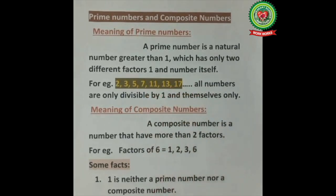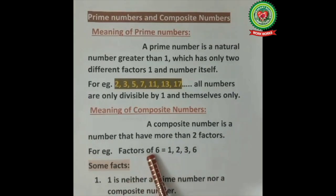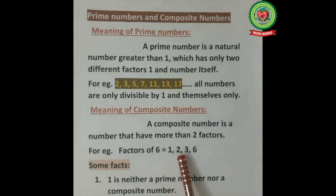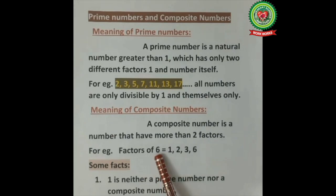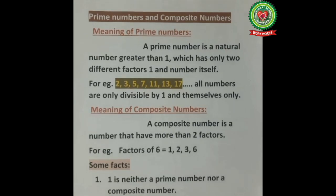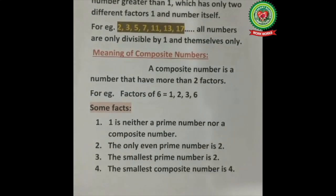They are not factors of any other number. Now, a composite number is a number that has more than two factors. For example, the factors of 6 are 1, 2, 3, and 6 — that is more than two factors, so 6 is a composite number. Before we find prime and composite numbers, there are some facts to remember.